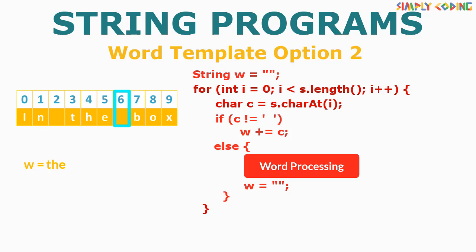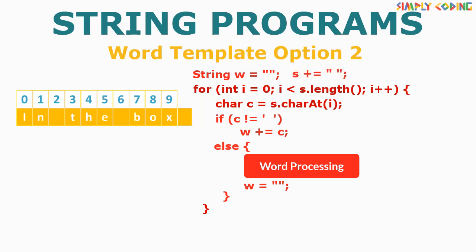This process will continue for all words in a sentence. Now, we have a little problem when we reach the last word. For each word, we have been using space to tell us that we have one word ready. But the last word does not have a space in the end, so the loop will end without giving us the last word. To fix it, we will add a space to the end of our string before the loop so that we can get the last word and then the loop can end. We will use this template to solve all our word problems.